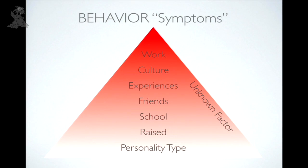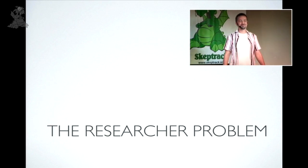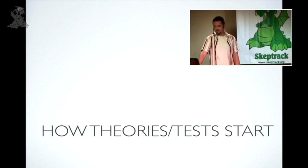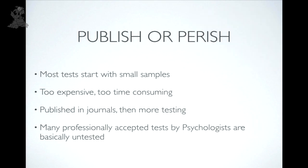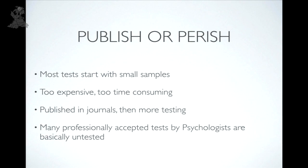Fourth: the researcher problem. Driven by 'publish or perish,' researchers start with small samples — large-scale testing is expensive. Papers get published in peer-reviewed journals, adopted by others, and proliferate. The vast majority of personality tests available to psychologists are, by practical standards, virtually untested. A few — like the MBTI, the Big Five, and Gallup StrengthsFinder — have undergone extensive testing, which is why they're the ones you hear about. Most accepted tests don't meet what the general public would consider rigorous standards.